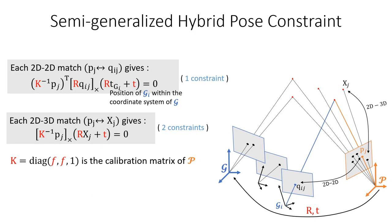The 2D-2D and 2D-3D point correspondences between a pinhole and a generalized camera impose algebraic constraints on R, T, and F. Each 2D-2D point correspondence gives us one constraint and each 2D-3D point correspondence gives us two constraints.